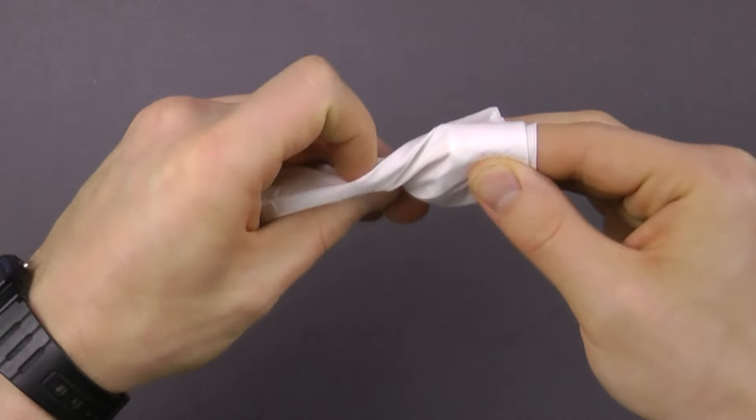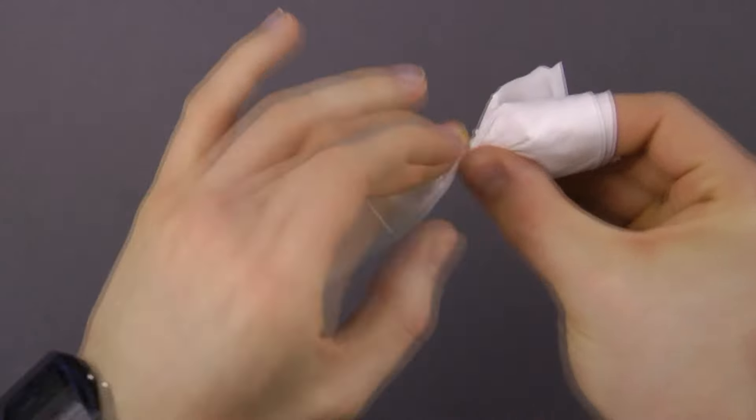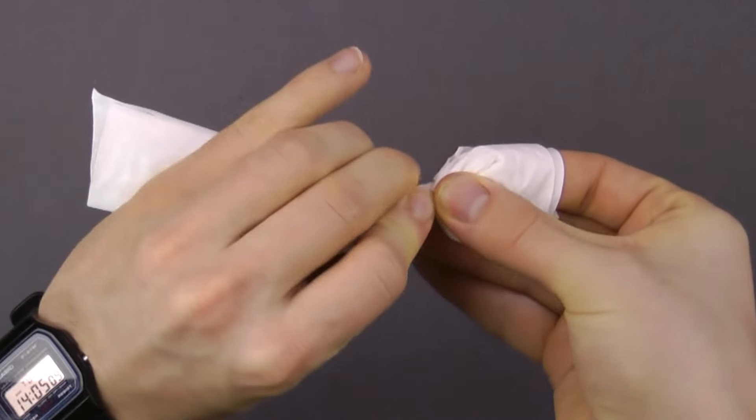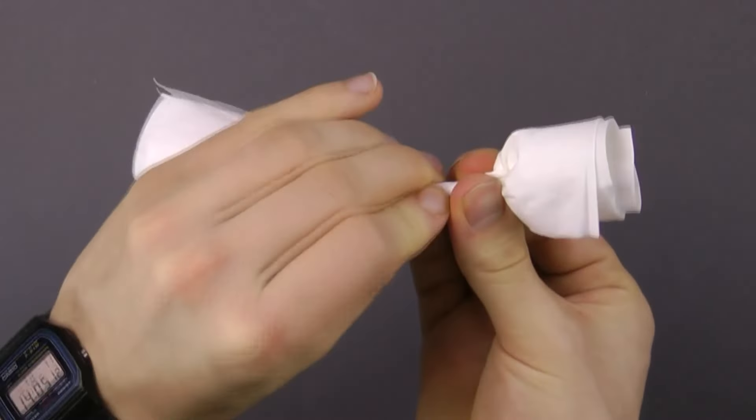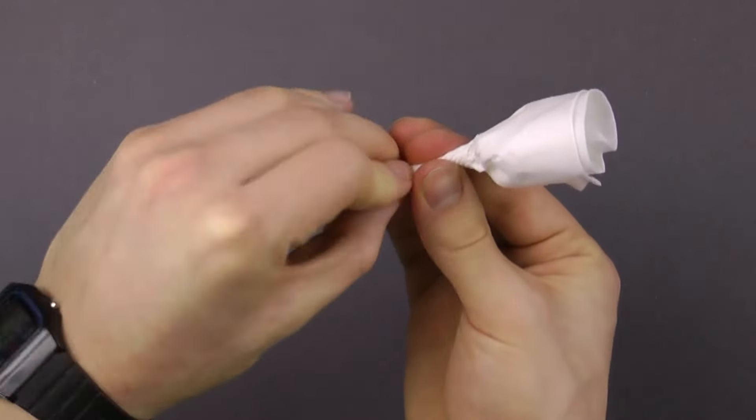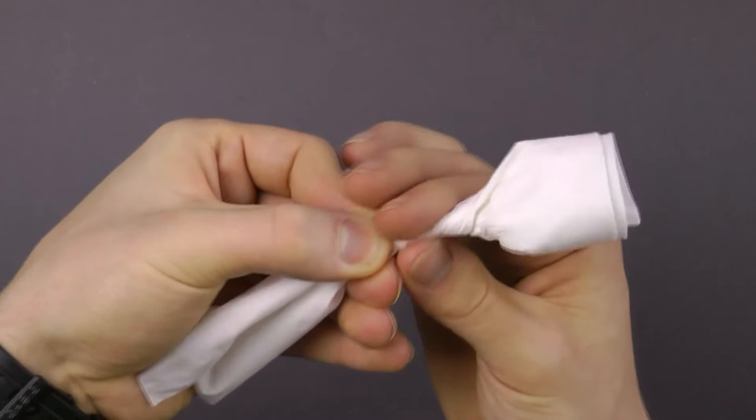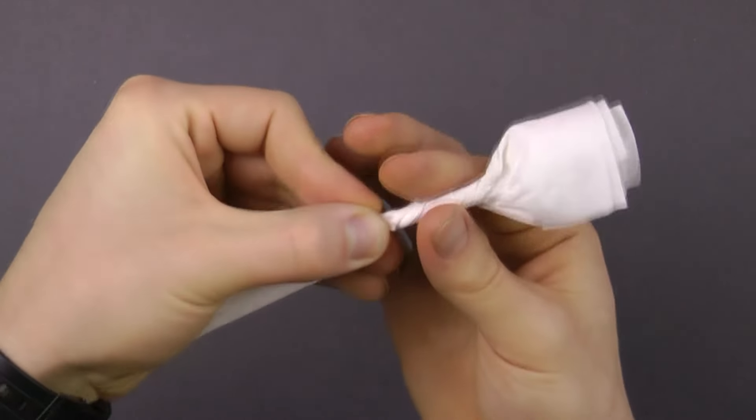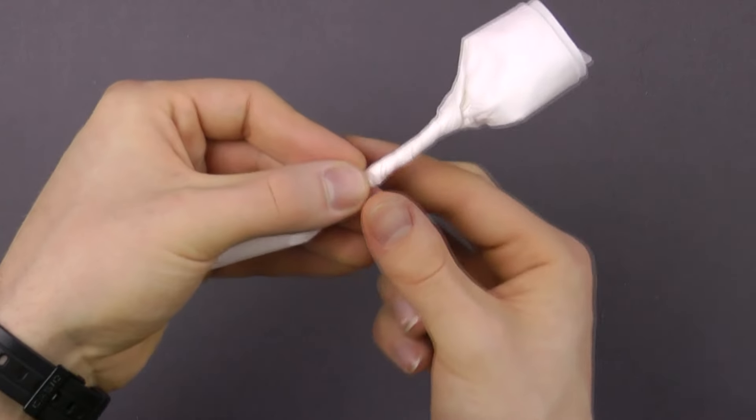Now pick the middle and twirl it around. The point is about where the edge of the napkin was, and you continue to twist in the stem of the rose so the blossom is about as wide here as the stem. Then take the bottom, this corner.